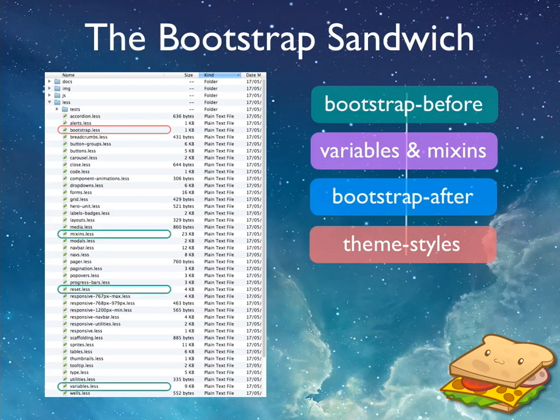The first files — variables, mixins, and base styles — are your core basic files that reset any browser-specific settings. You import them and then apply your own variables and mixins on top. That way, if you wanted to change the default body or text colour, you'd apply it there and then import the rest of Bootstrap. It's like a nice override — similar to how you can override methods in classes — as opposed to directly going into the Bootstrap files and making those changes.